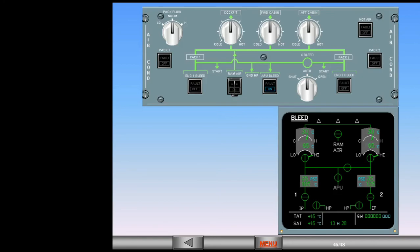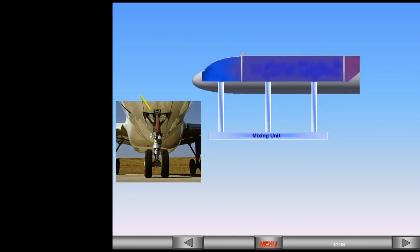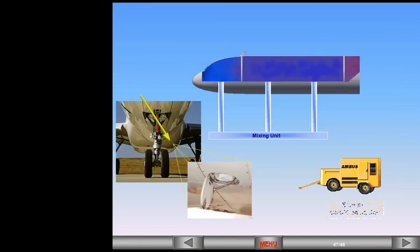After landing and engine shutdown, the system can be set to run from the APU, switched off completely, or an external conditioning unit can be connected via a low pressure connection point on the underside of the aircraft. The low pressure air is fed to the mixing unit and then into the three zones. There are no indications in the cockpit to show that an external conditioning unit is in use.